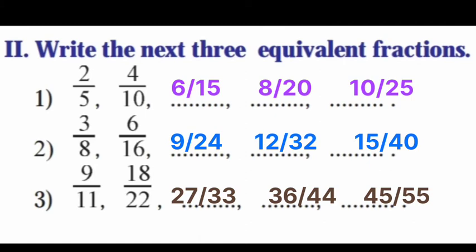Third: 9/11 — 9 times 2 is 18, 11 times 2 is 22; continuing: 27/33, 36/44, 45/55.